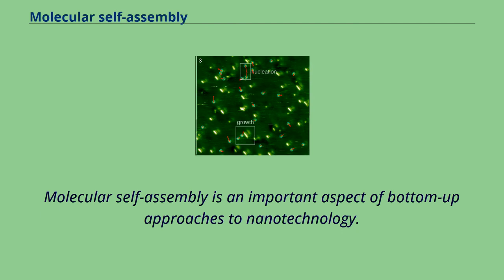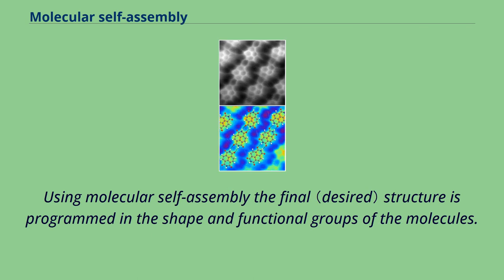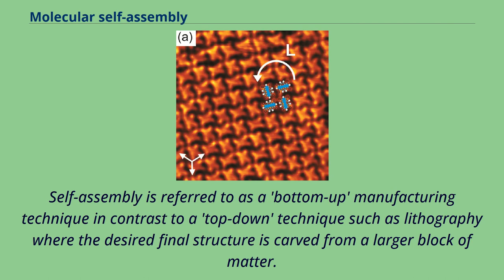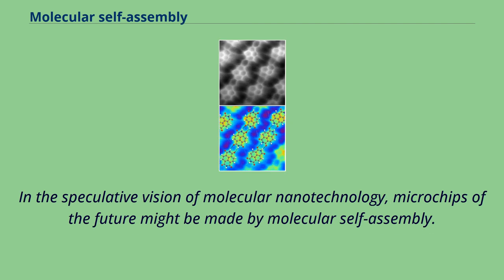Molecular self-assembly is an important aspect of bottom-up approaches to nanotechnology. Using molecular self-assembly, the final structure is programmed in the shape and functional groups of the molecules. Self-assembly is referred to as a bottom-up manufacturing technique, in contrast to a top-down technique such as lithography, where the desired final structure is carved from a larger block of matter. In the speculative vision of molecular nanotechnology, microchips of the future might be made by molecular self-assembly.